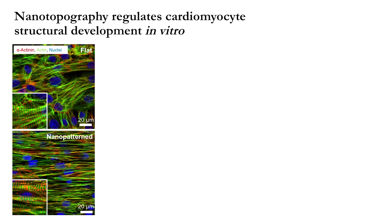The data on the previous slide is from rodent tissue. We have subsequently expanded our data set to include data from human embryonic and induced pluripotent-derived stem cell sources. Here we can see human stem cell-derived cardiomyocytes on flat and nanopattern surfaces, and again we see the reorganization of the cytoskeletal structure to promote a uniaxial tissue that is more representative of the native microenvironment.